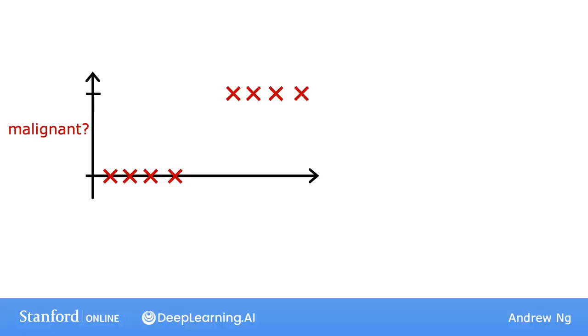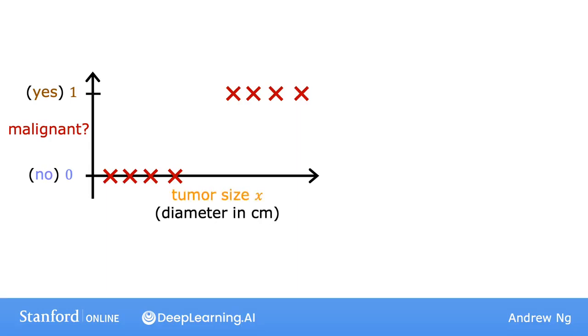Let's talk about logistic regression, which is probably the single most widely used classification algorithm in the world. This is something that I use all the time in my work. Let's continue with the example of classifying whether a tumor is malignant, where we're going to use the label 1, or yes, the positive class to represent malignant tumors, and 0 or no or negative examples to represent benign tumors. Here's a graph of the dataset, where the horizontal axis is the tumor size, and the vertical axis takes on only values of 0 and 1, because it's a classification problem.